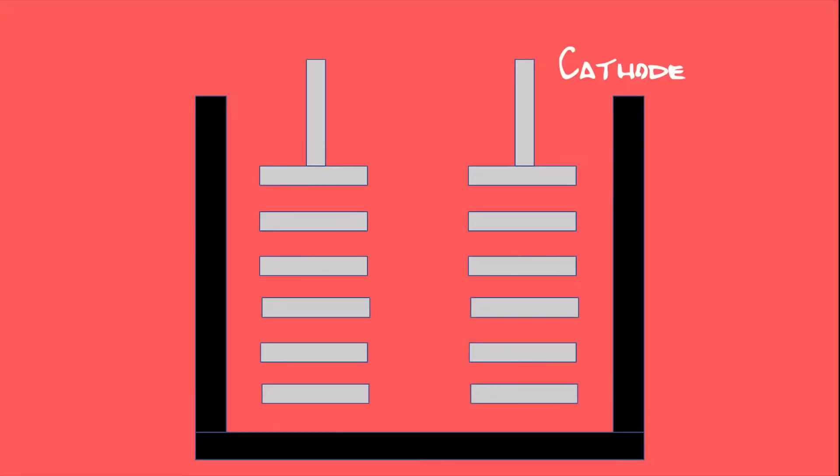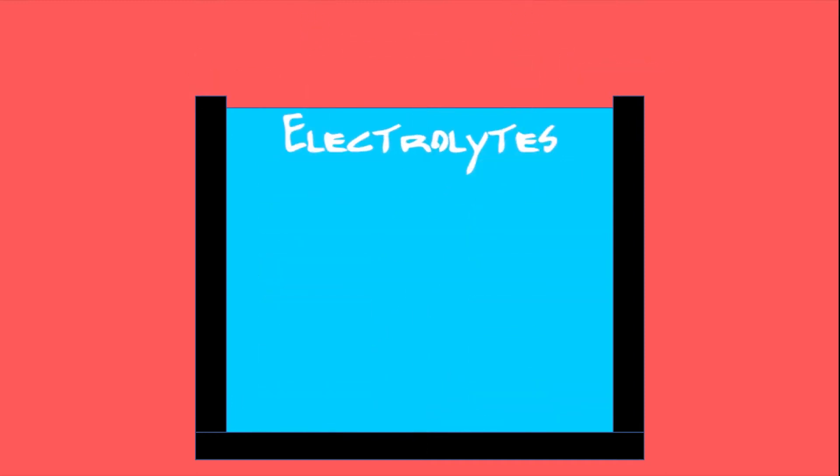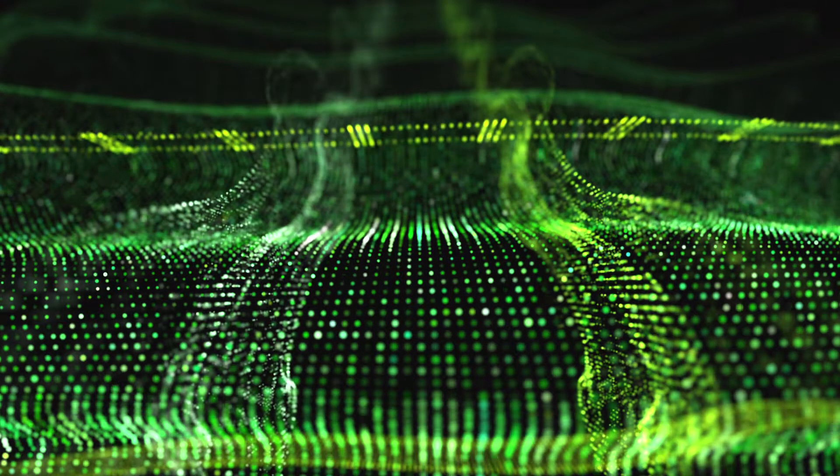A battery is made up of an anode, cathode, separator, electrolyte and two current collectors, positive and negative. The anode and cathode store the lithium. The electrolyte carries positively charged lithium ions from the anode to the cathode and vice versa through the separator. The movement of the lithium ions creates free electrons in the anode which creates a charge at the positive current collector.